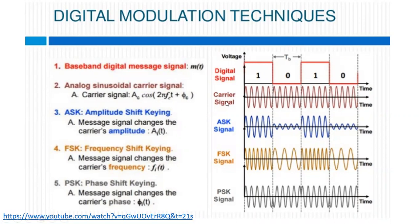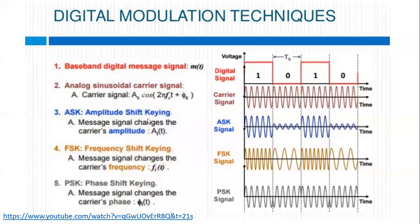To transmit, we are using the carrier signal. The carrier signal is of constant amplitude, constant frequency, and constant phase. In the carrier signal equation, Ac indicates the constant amplitude. It is a sinusoidal signal because it is analog in nature. Then we have 2πfc, that is omega c — the angular frequency. And phi basically indicates the phase.